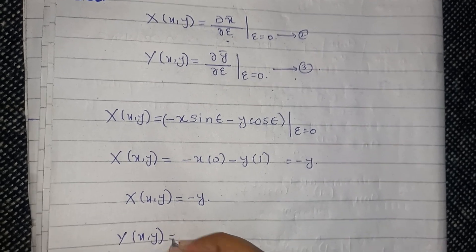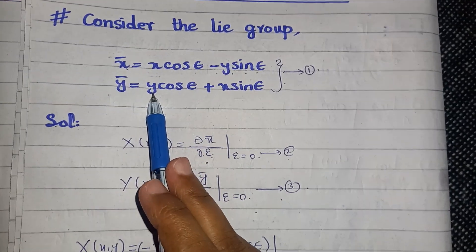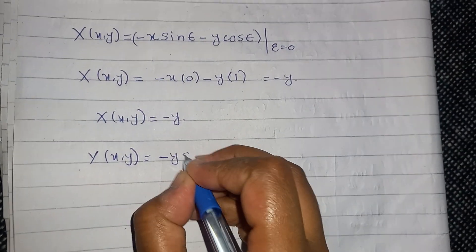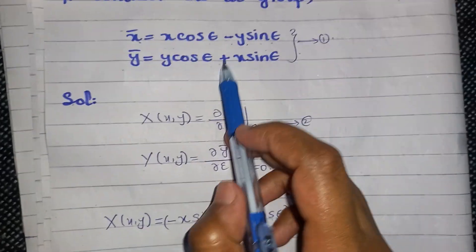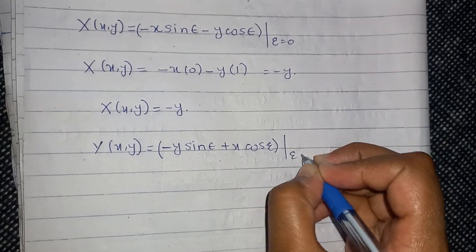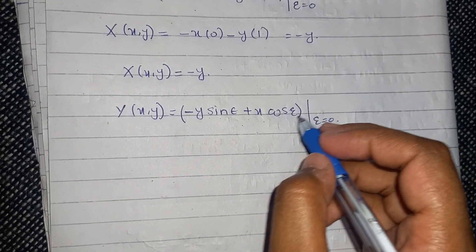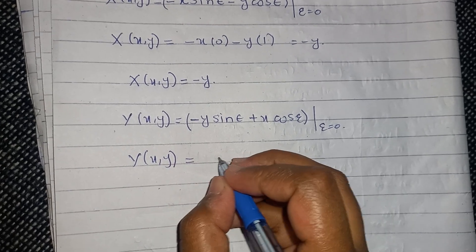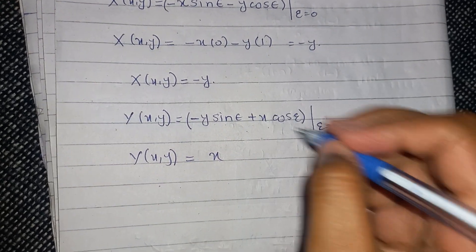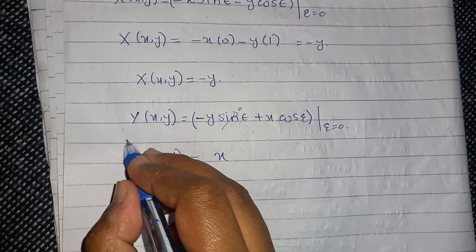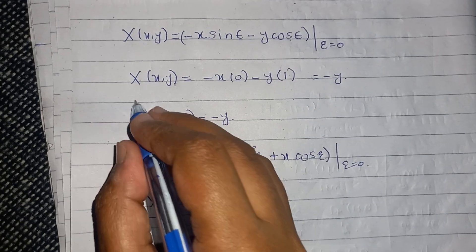In the similar way, we write capital Y(x, y) and take the partial derivative with respect to epsilon, giving minus y sine epsilon plus x cosine epsilon, evaluated at epsilon equal to zero. Substituting epsilon equal to zero, sine(0) equals zero and cosine(0) equals one, so capital Y(x, y) equals x. These are the required infinitesimal transformations.